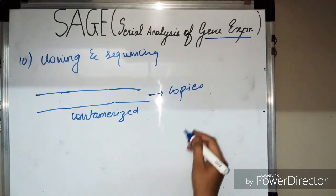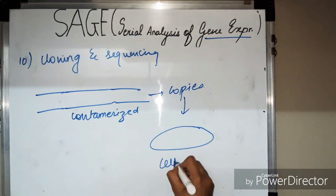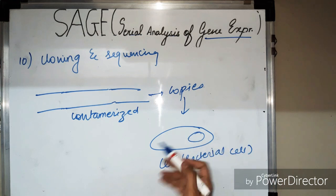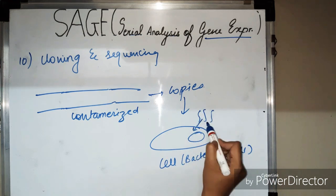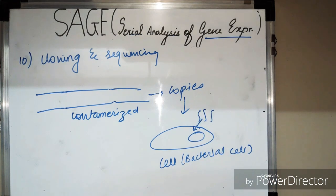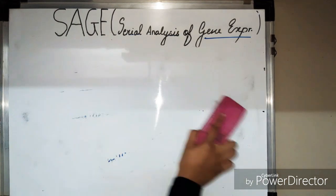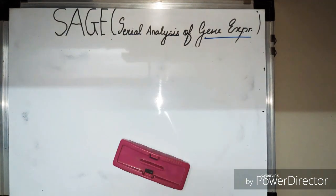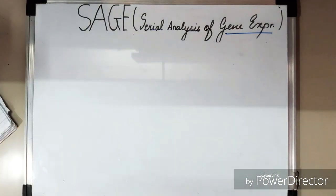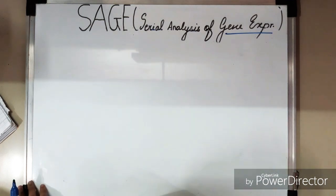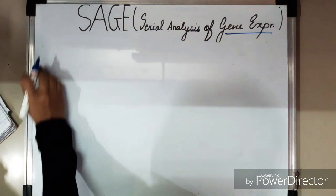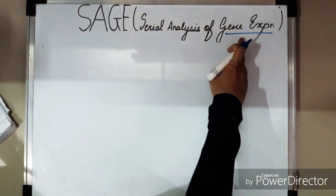After concatemerization, Step 10 is cloning and sequencing. Many copies are required, so the concatemers are inserted into bacteria, which act like living copy machines to create millions and billions of copies of the DNA. These copies are then sequenced and stored in a SAGE database.